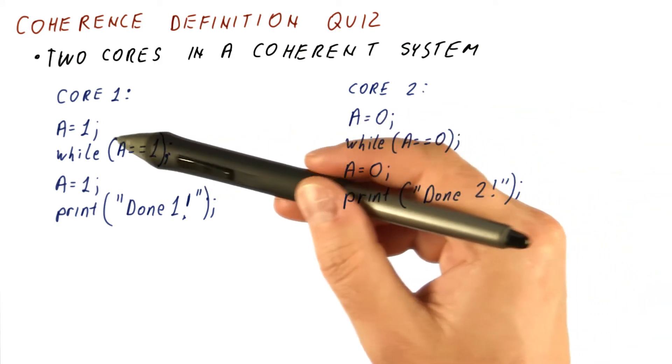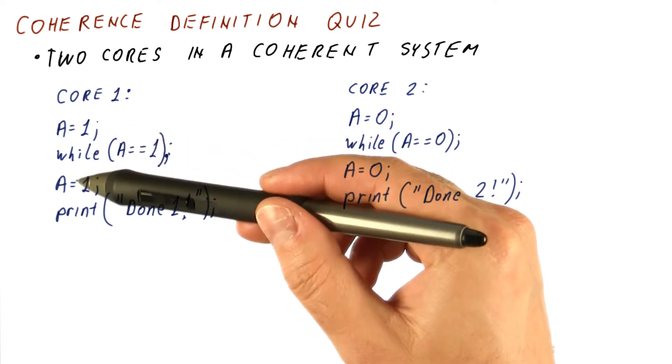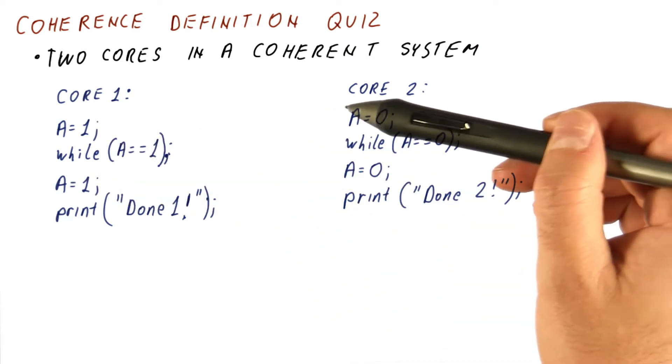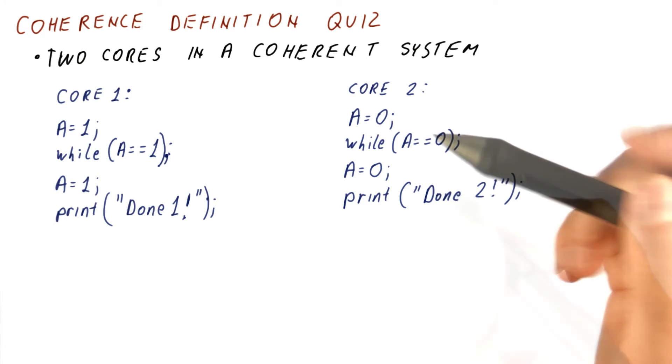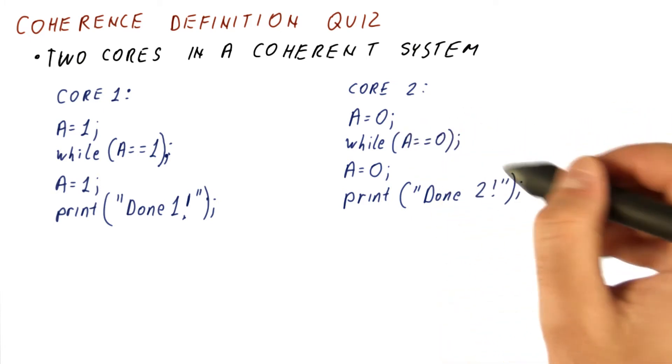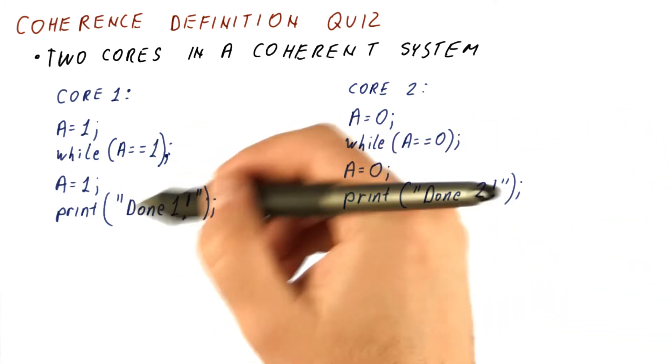It could be, for example, that core one executes several of these while core two is still not even beginning. So you can insert arbitrary delays in between any of the statements here and here.